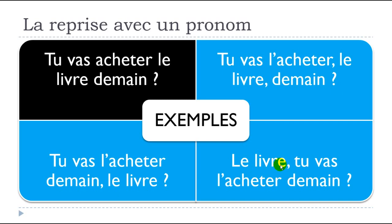The third option is to start with 'le livre': 'le livre, tu vas l'acheter demain'. All three options are possible and quite flexible, but you need to make a little separation between the pronoun and the word, which is why we put commas. So the three sentences are: 'tu vas l'acheter, le livre, demain' / 'tu vas l'acheter demain, le livre' / 'le livre, tu vas l'acheter demain'. These are quite common when we want to insist.